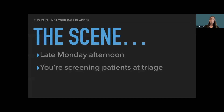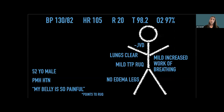My second patient: late on a Monday afternoon, I'm screening in triage. A 52-year-old gentleman with only a history of hypertension comes in doubled over in pain — his right upper quadrant is killing him. I think slam dunk, acute cholecystitis, and decide to scan his gallbladder.